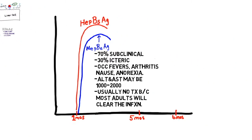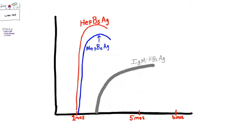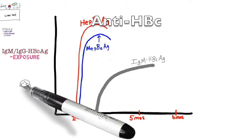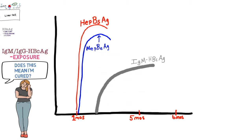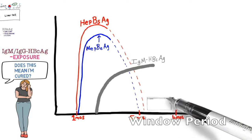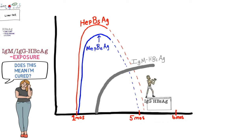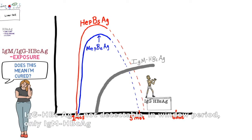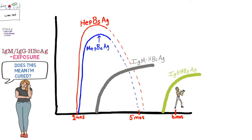We start producing IgM antibodies — IgM hepatitis B core antigen antibodies. Note that if you see IgM or IgG hepatitis B core antigen antibody, this equals exposure only; it does not mean you are cured. IgM is putting up such a good fight that hepatitis B surface antigen and hepatitis B E antigen fall to almost undetectable levels. This is the window period — the immune system is fighting to produce anti-HBs antigen, but we just don't know which side is going to win.